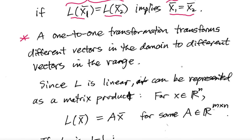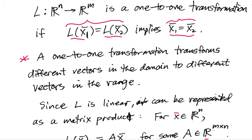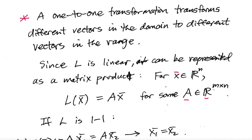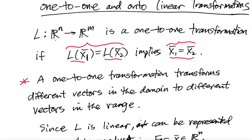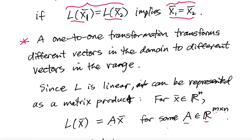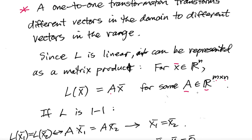Since L is linear, it can be represented as a matrix product. For x̄ in R^n, we have L(x̄) = Ax̄ for some matrix A with dimensions m by n. So n-vectors go in and m-vectors come out. Since the matrix is on the left, it has dimensions m by n. This is why I turned things around — you're used to thinking of the matrix as having m rows and n columns.